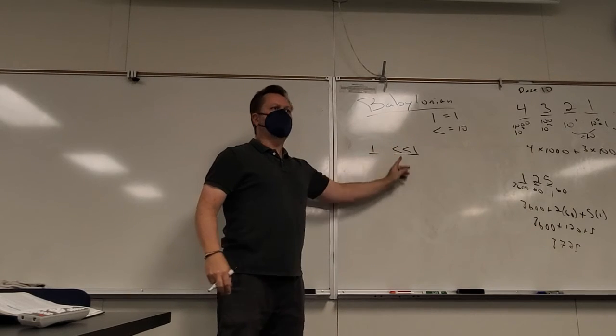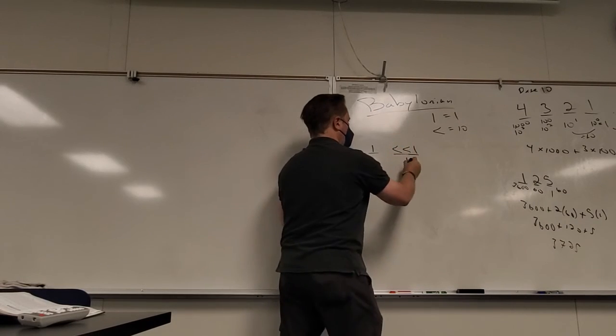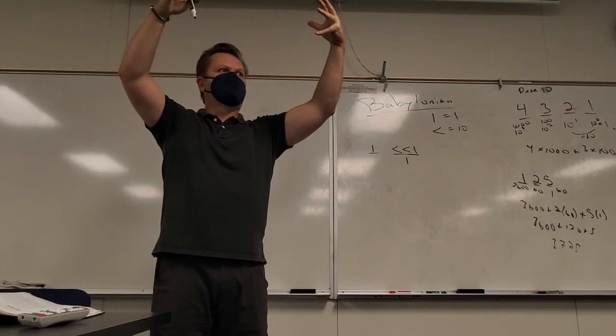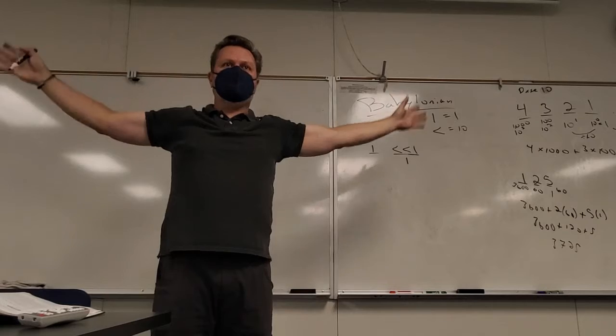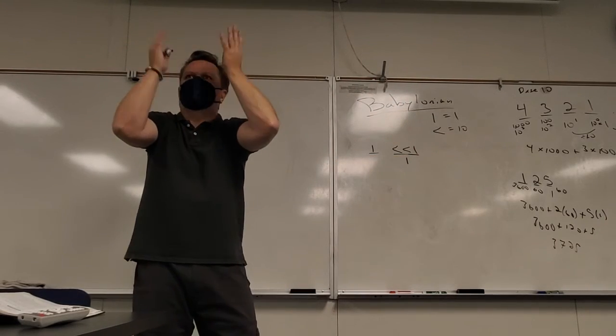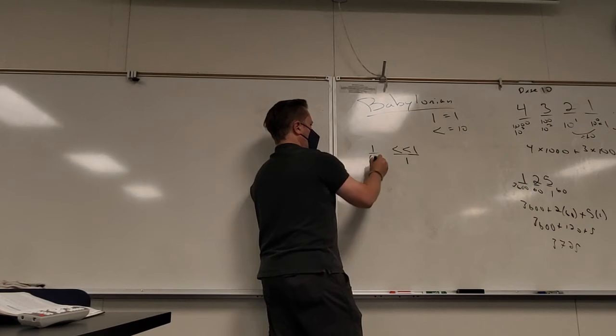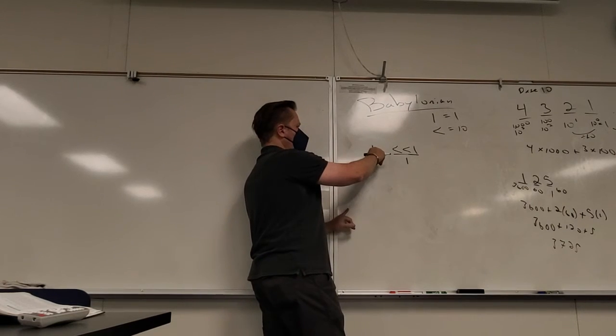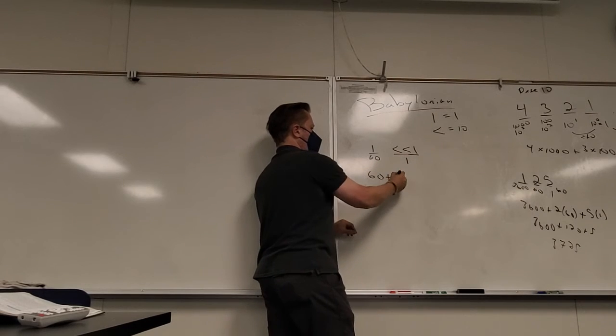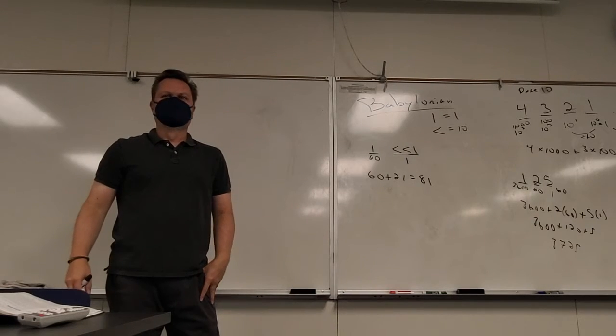Now here's the next level of weirdness. Base ten, what's the biggest number I could put in any single place? Nine. So base ten, the biggest number, because of course, if I put one, two, three, four, five, six, seven, eight, nine, what's the next number after that? Ten. It rolls over just like a speedometer.